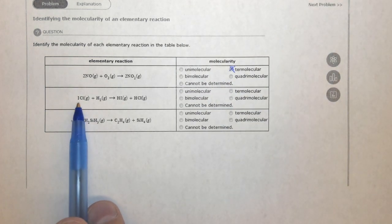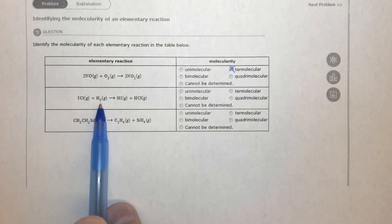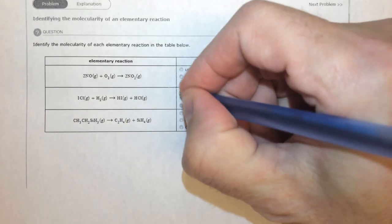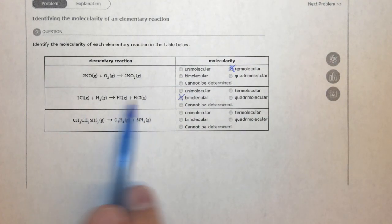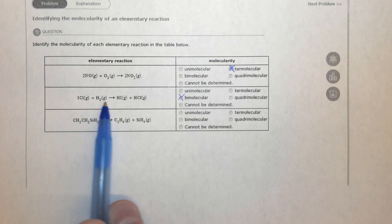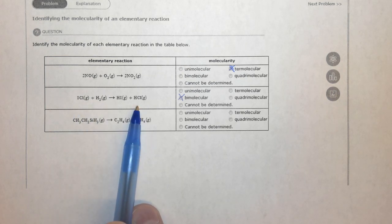Here, you have one ICL and one H2, that's two things, bimolecular. These are very common, because then these two things can collide together and go on to form products.